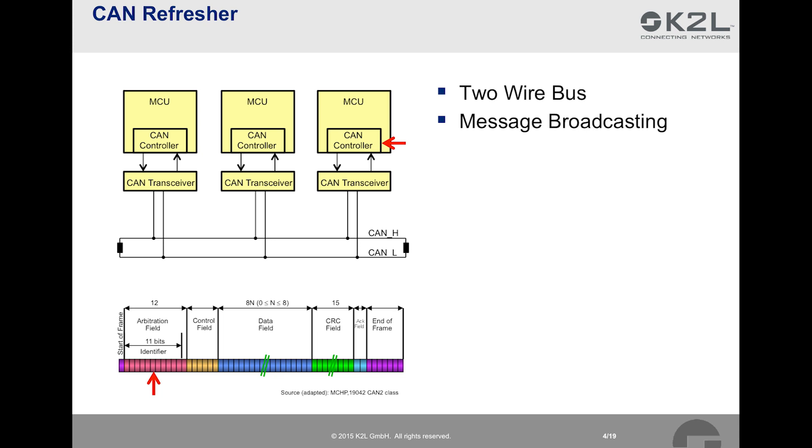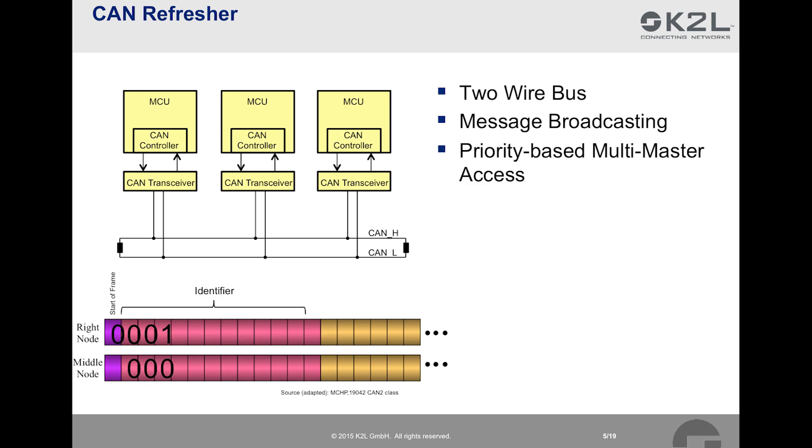The third important characteristic we would like to discuss is the priority-based multi-master access. When there is just a single CAN node that wants to send a message when the bus is idle, there is no problem. It sends a start of frame bit and transmits the frame with the structure we have discussed before. The scenario becomes more interesting if there are two or maybe even more nodes that want to send a message at the same time. And the question that naturally arises is, how can these collisions be resolved? In CAN, the message identifier is used to determine which node is allowed to send. The only thing one needs to bear in mind to understand this is that on CAN, a logical 0 is dominant and overrides a logical 1. Let's assume that the right node and the middle node in our example want to send a message. At the bottom, we see that the right node sends a start of frame bit to indicate that a message is pending for transmission. The middle node also realizes that it wants to send a message and synchronizes its clock to start of frame bit of the right node.